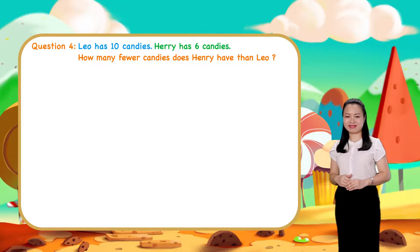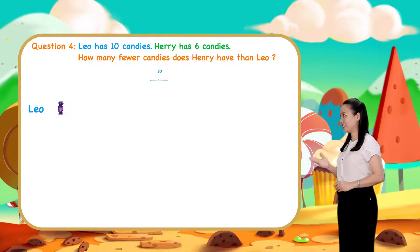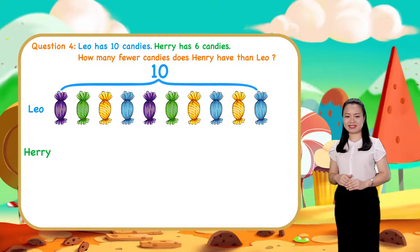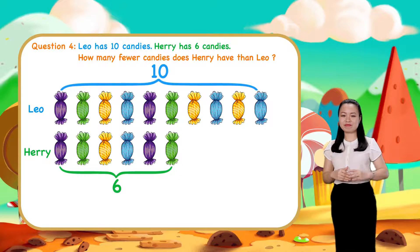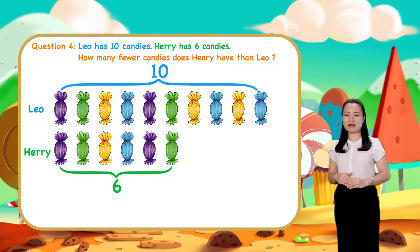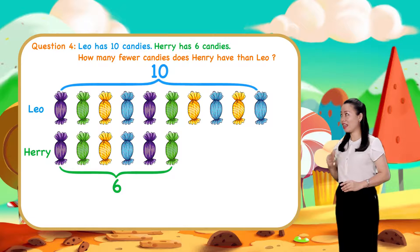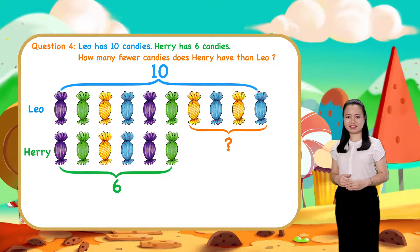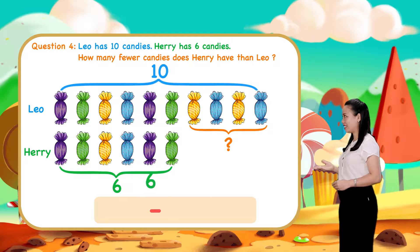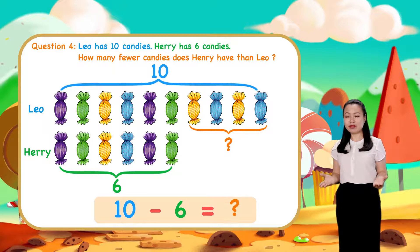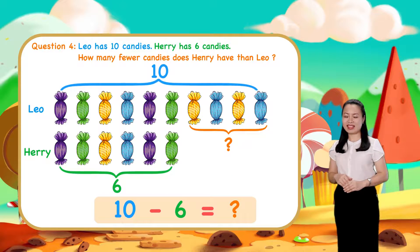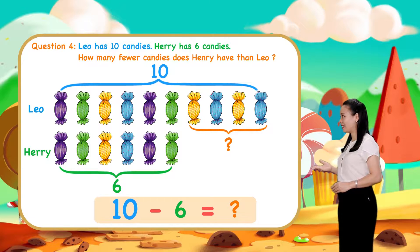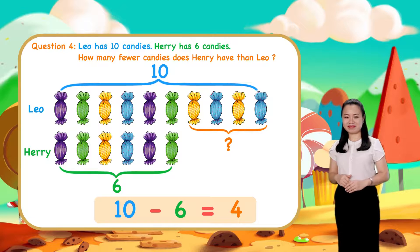Let's find the answer together. Leo has 10 candies. Henry has 6 candies. So Henry has fewer candies than Leo. We subtract 6 from 10 to find the number of fewer candies Henry has than Leo. So, 10 minus 6 equals 4. We conclude, Henry has 4 fewer candies than Leo.